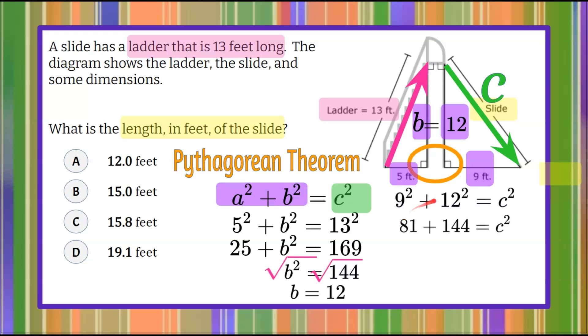9 squared is 81. 12 squared is 144, all equal to our hypotenuse squared. The sum of 81 and 144 is 225, equal to c squared. To solve for c, the length of our slide, we're going to find the square root of each side of our equation. The square root of 225 is 15. The square root of c squared is c.